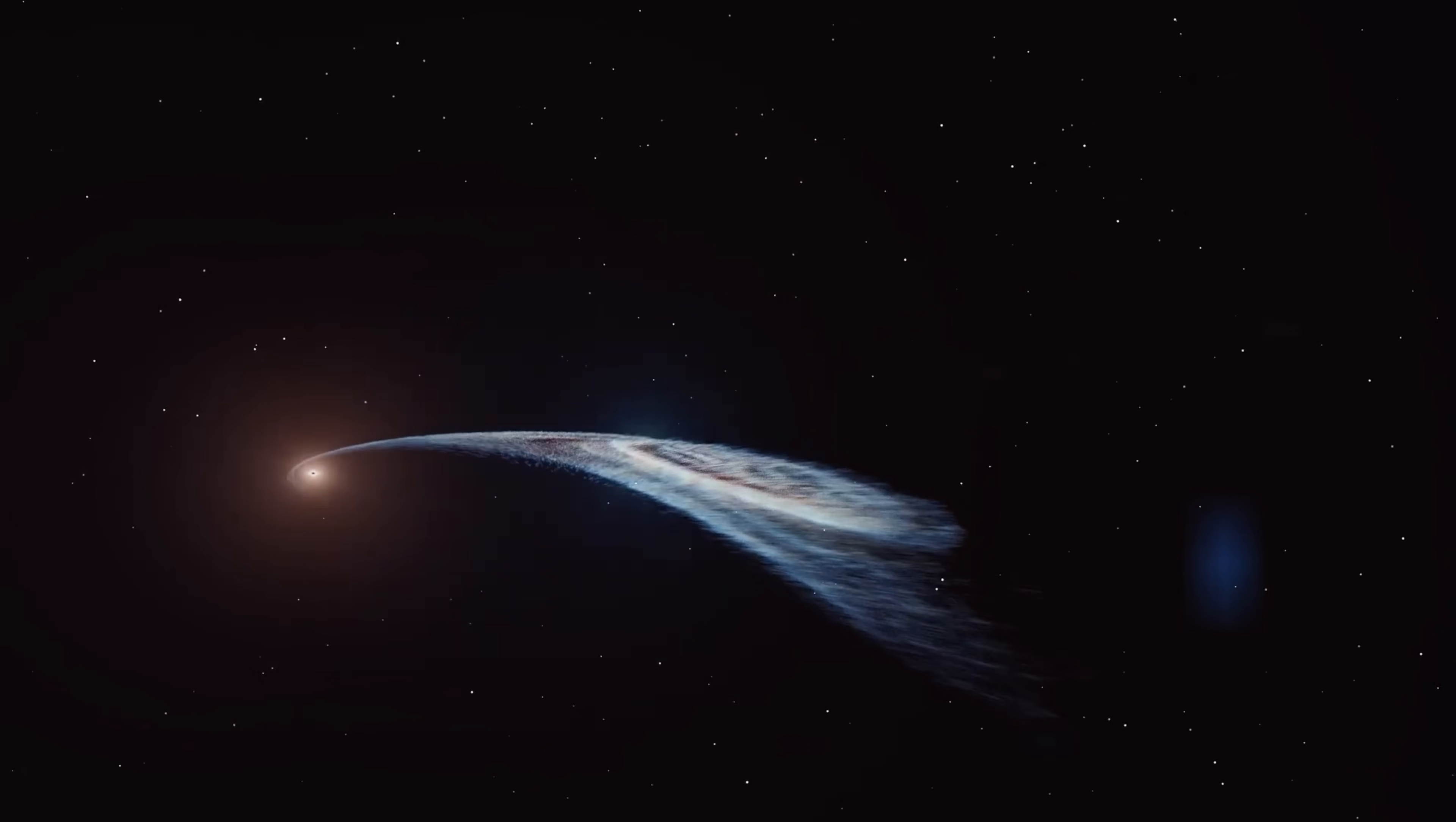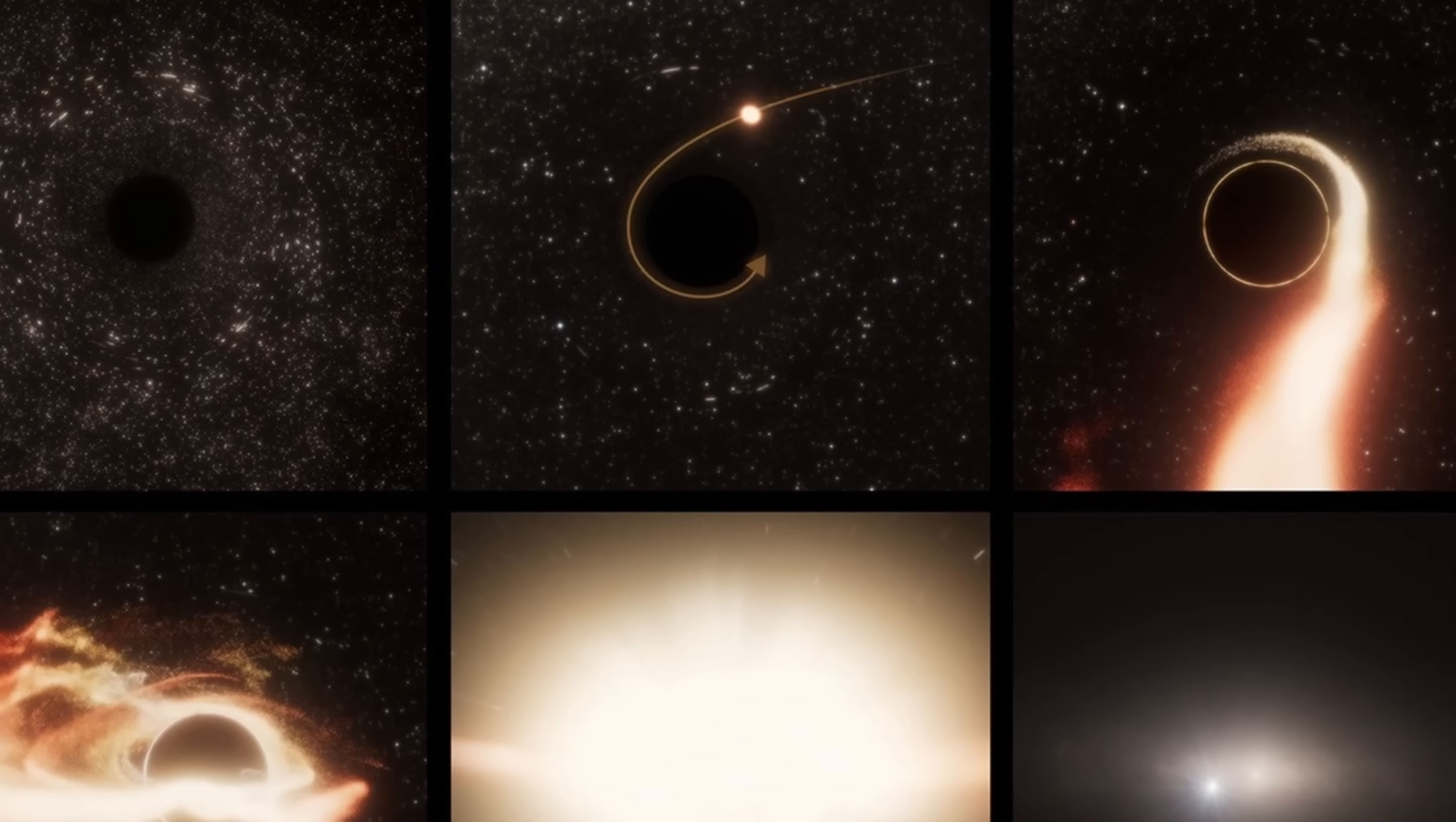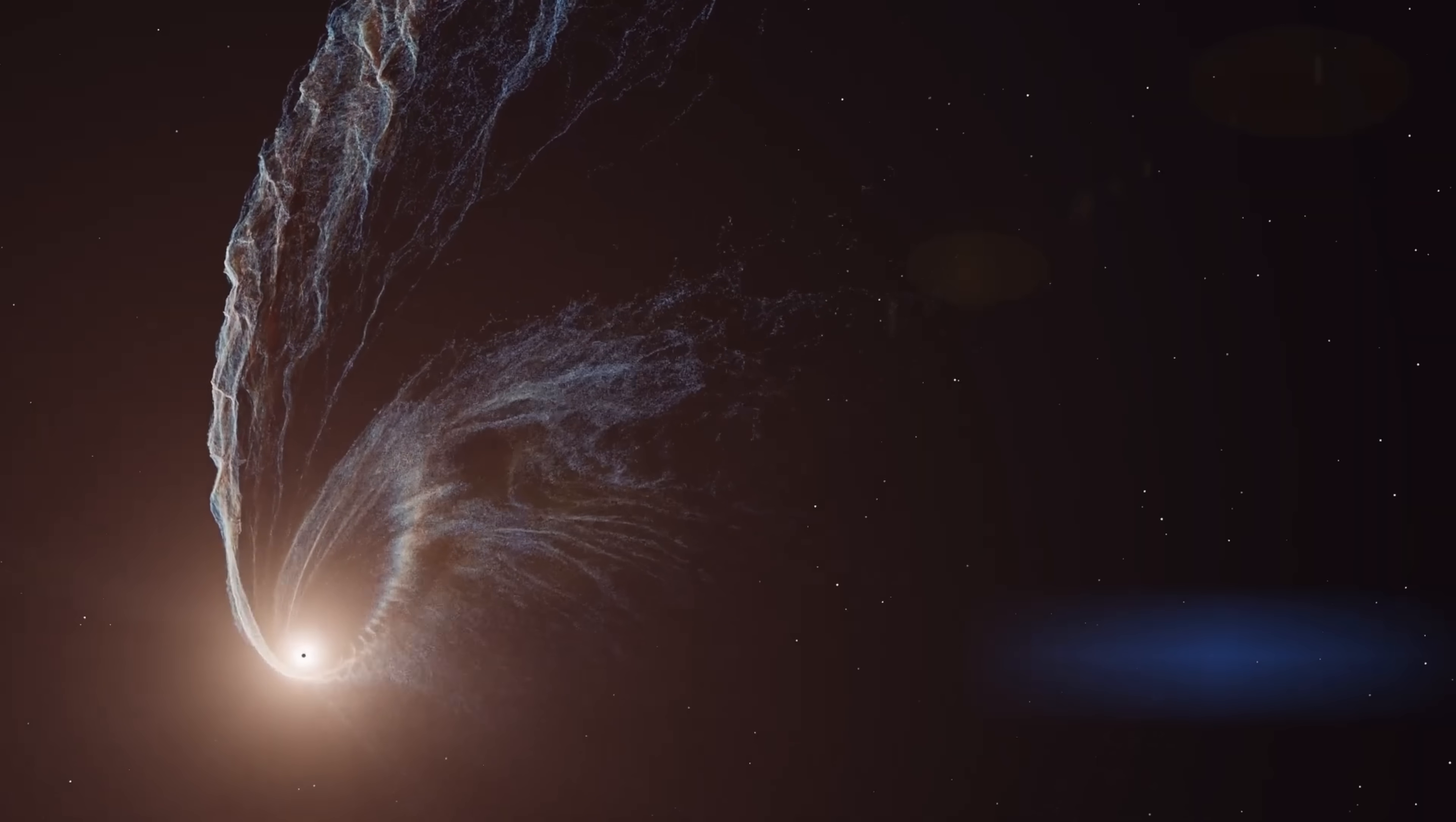An event predicted back in the 70s but first observed in the 1990s. And in this case this is the famous spaghettification of a star. When any star gets close enough to a typical supermassive black hole, massive tidal forces break it apart sending it spiraling down into the event horizon.